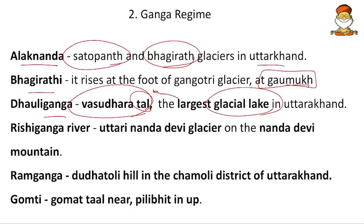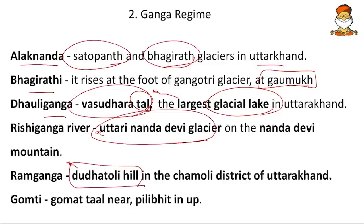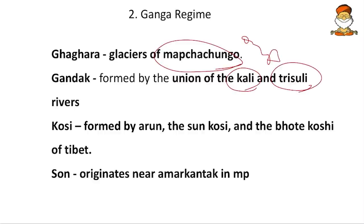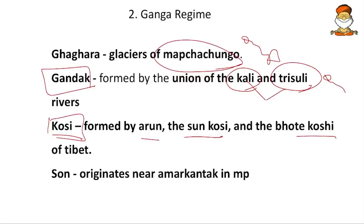Rishi Ganga originates at the Uttari Nanda Devi glacier on the Nanda Devi mountain. Ramaganga originates at Dudatoli hill in Chamoli district of Uttarakhand. Gomati originates at Gomat Tal near Pilibhit National Park in UP. Ghaghra originates from the glaciers of Mapchachungo — remember this glacier. Gandak is formed by the union of Kali and Trishuli rivers. Kosi is formed by Arun, Sun Kosi, and Bote Kosi rivers — all tributaries present in Nepal. The Sone river originates near Amarkantak in Madhya Pradesh and flows northwards.